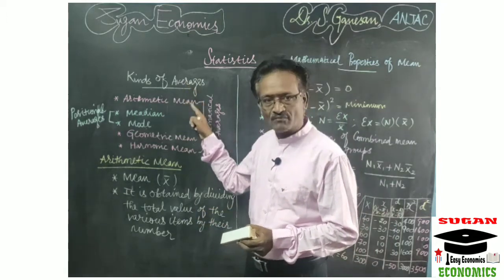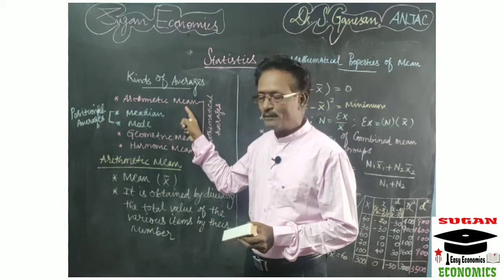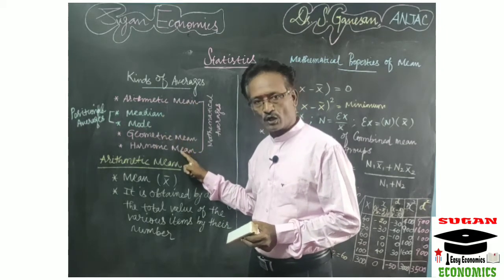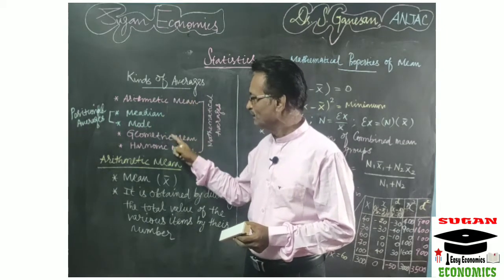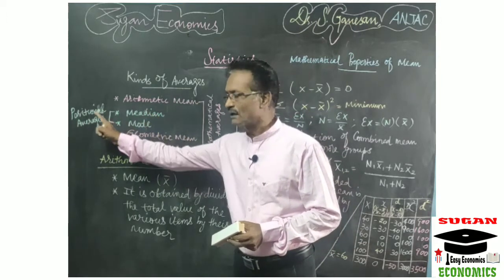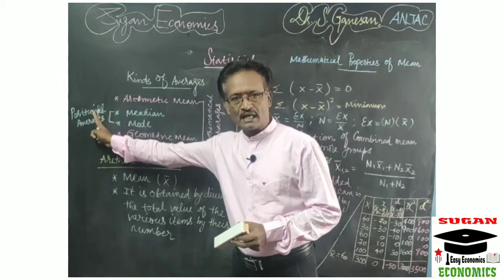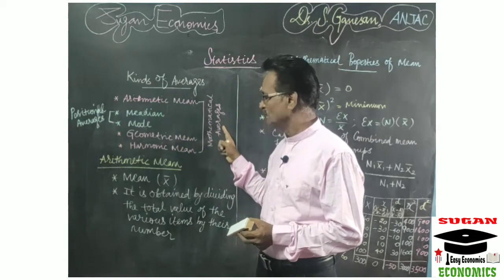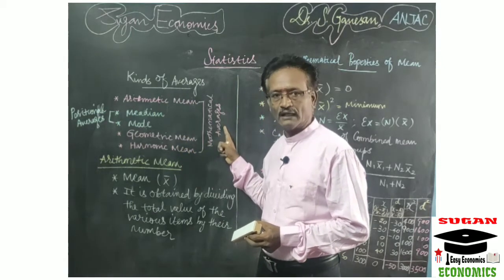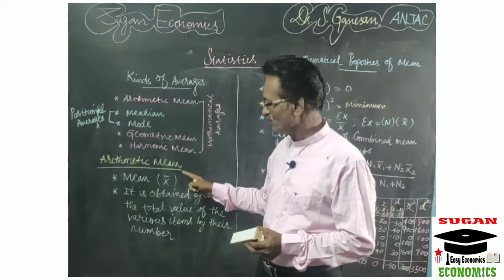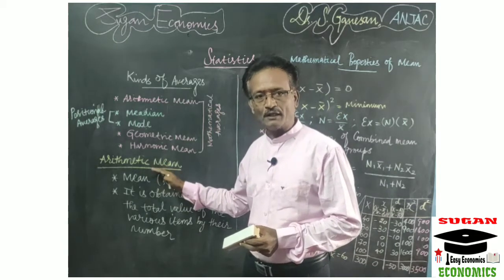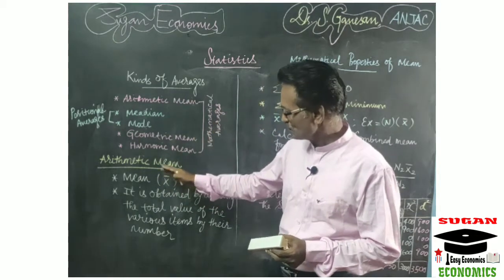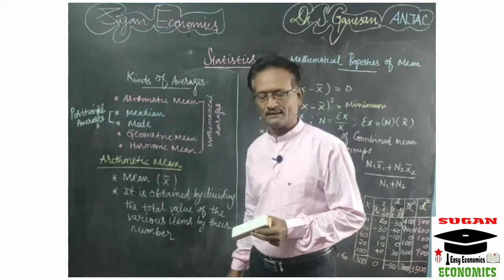To recap: there are five kinds of averages — arithmetic mean, median, mode, geometric mean, and harmonic mean. Out of these five, median and mode are called positional averages, and arithmetic mean, geometric mean, and harmonic mean are called mathematical averages. Now we are going to discuss arithmetic mean and its properties.